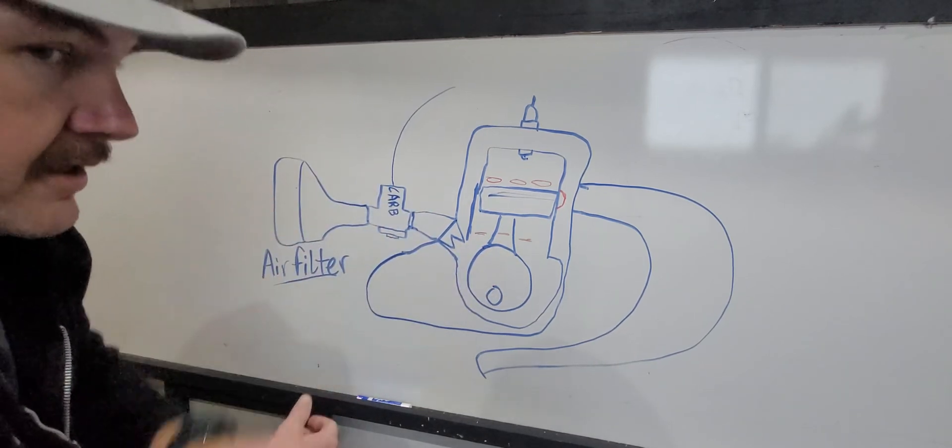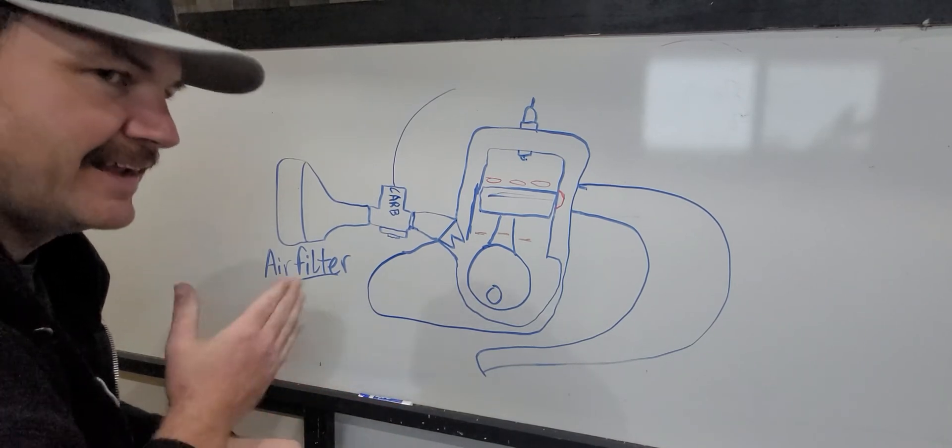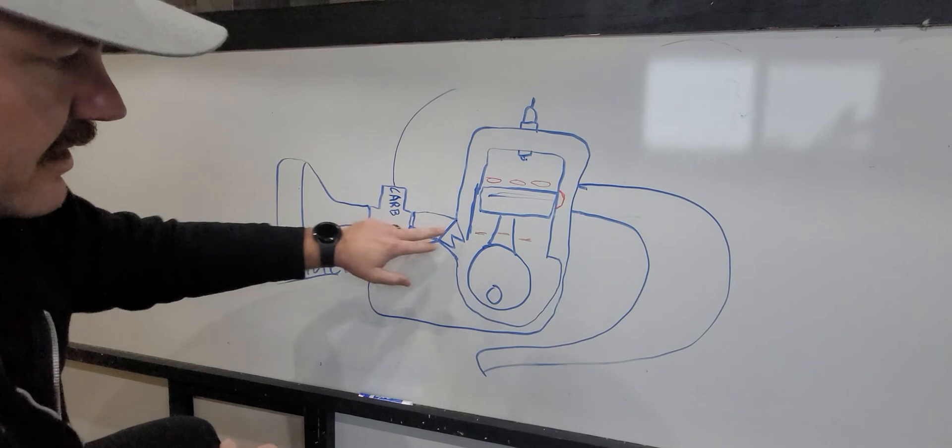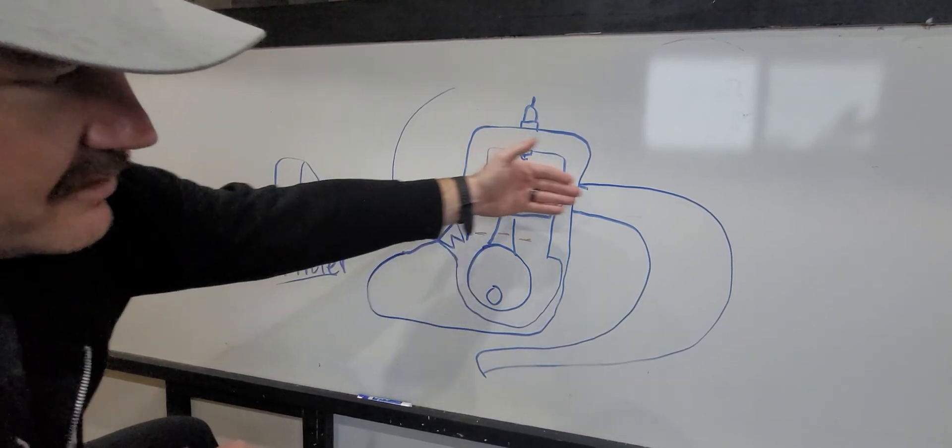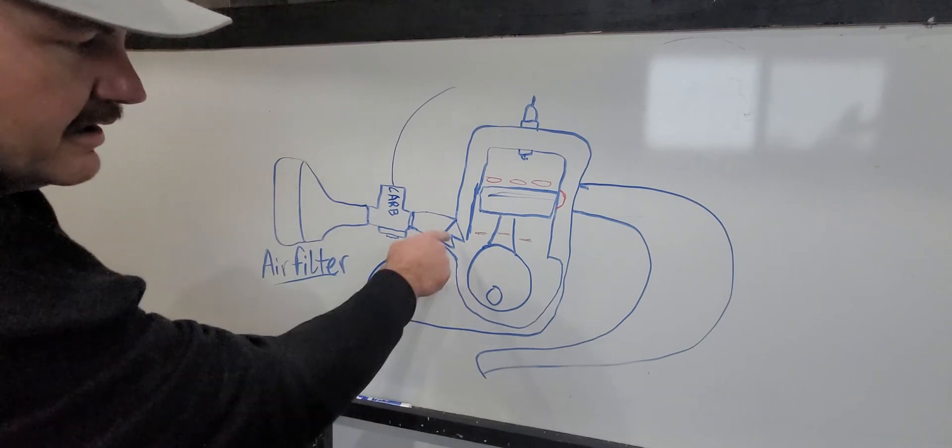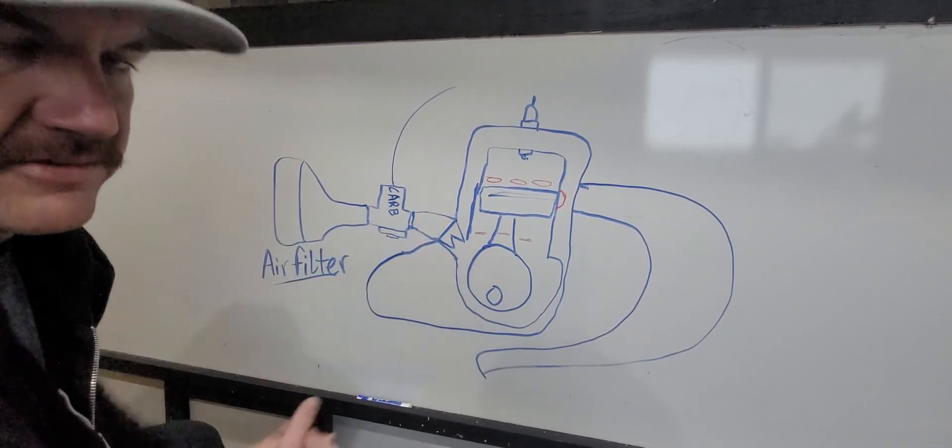So to really simplify it, you have an air pump. That's really all any combustion engine is, is an air pump. And this makes it to where it can only pull air this way and force it out this side. And nothing can go back this way. And that's what that's doing, so it's a check valve.